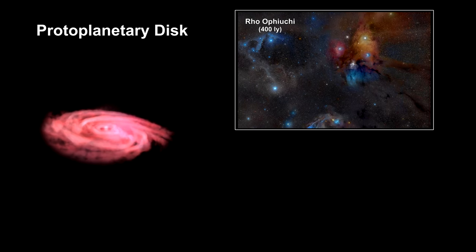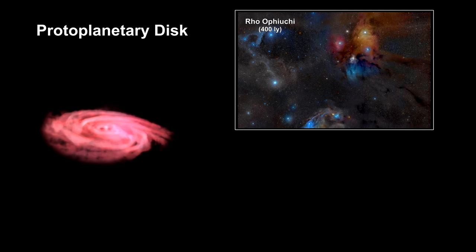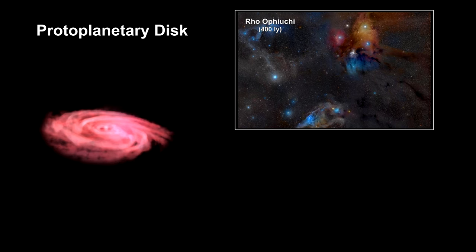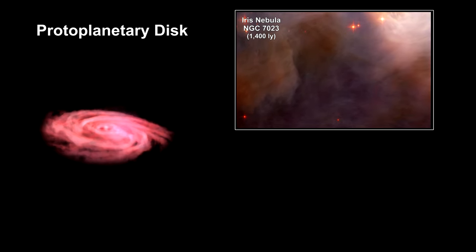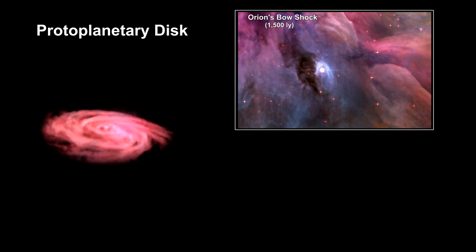99% of the mass of the circumstellar disk is in the form of gas, with just 1% in the form of dust. The solid dust has little effect on the star formation, but it's key to planetary formation.